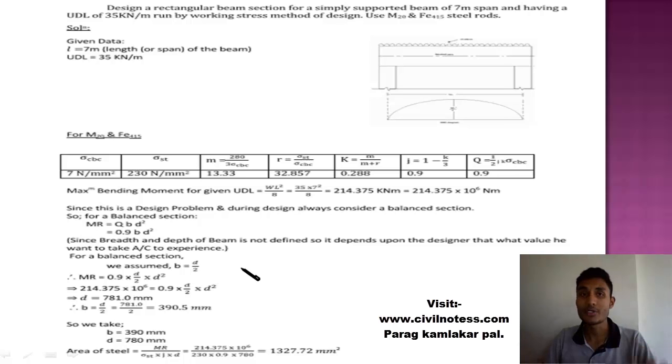We calculate this moment and compare with MR. Q into bd square, where b is converted to d by 2, so we got the depth. Using the relation b equals d by 2, put the depth over there and you got b. Now we have the value of b and d. The main function of the design is to get the dimension of the particular beam section and determine the steel provided in the particular section. We get somewhat round up figures: 390.5 we are taking as 390 and d is 781 so we take 780.